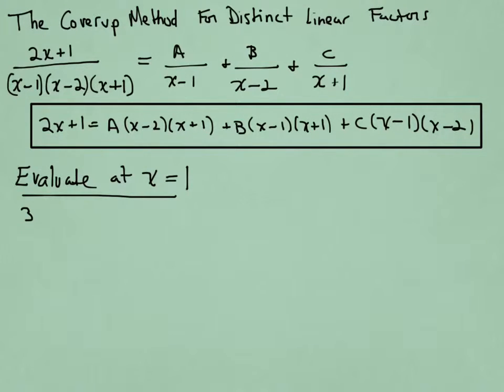If I do that, on the left I get 3. On the right I get A times, and I'm going to plug 1 into each of those factors, so 1 minus 2, that will give me minus 1, and then 1 plus 1, so it will give me 2. And now I'm going to take that and divide. A is minus 3 over 2. I'm just taking the expression and solving for A.